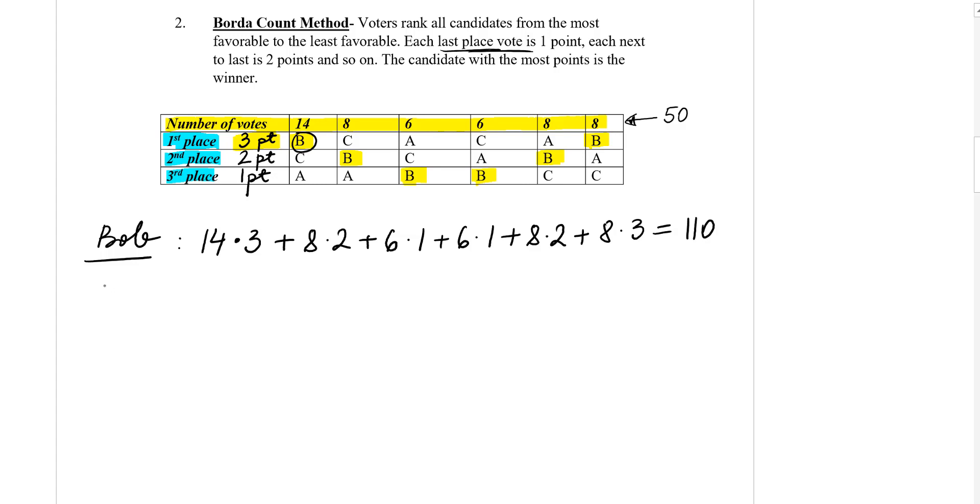Now let's look at Charlie. So Charlie, I'm going to color code it in green. Charlie has 14 votes, but on second place, which is two points, plus Charlie. Let me color code Charlie on each of them. So Charlie, the next one has eight votes on the first place, which is three points.